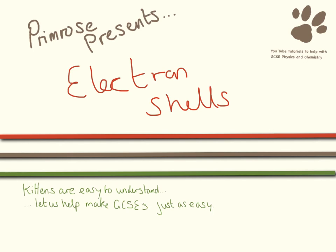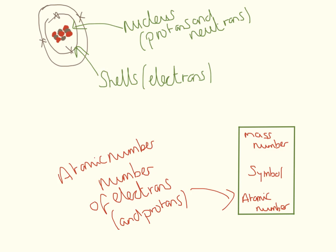Hello. In this video, we're going to be looking at electron shells, or how to draw the electron arrangement for an atom. As a super quick recap, you need to know that the nucleus is in the middle — this contains the protons and neutrons — and we have shells around the outside which have electrons in them.